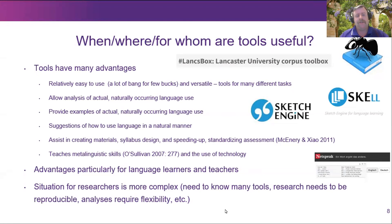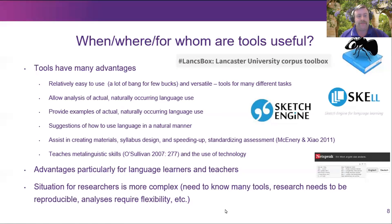For researchers the situation is more complex. They need to know and understand the tools available so they can recommend them, but they also need to produce reproducible knowledge — knowledge that is intersubjective, so that if I say a method works, someone else can verify that. Also, as researchers at the forefront of finding new knowledge, the tools must be extremely flexible to fulfill our research needs.